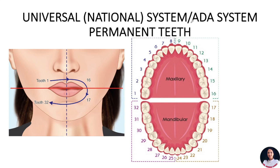The Universal system is just like reading numbers. You start with the top right quadrant and then go from right to left. Please note that it is the patient's right to left — when you are looking at the patient's mouth, the patient's right side is your left side, so don't get confused. In the Universal system, if we start from this side, this is tooth number 1.